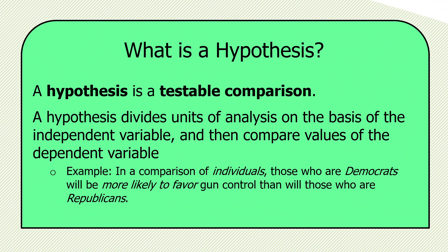Here's an example. In a comparison of individuals — that's the unit of analysis, put in italics — those who are Democrats, one value of the independent variable, would be more likely to favor gun control, one value of the dependent variable, than those who are Republicans.